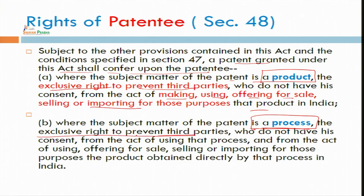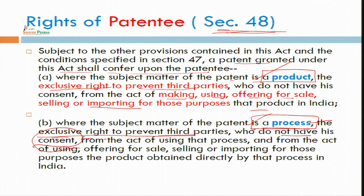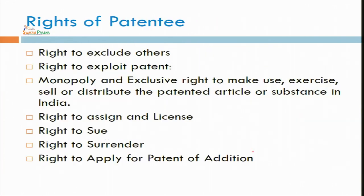Where the subject matter of the patent is a process, you have the same exclusive right to prevent third parties — but now the subject is the process rather than the product. Section 48 of the Indian Patent Act 1970 provides that without consent, no one can use your patent. Otherwise, you have the right to sue. You can file a case against any person who is using your product or using the same process you have taken for making the end product. In both cases, you have the right to prevent others from selling or importing those things in India.